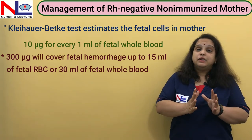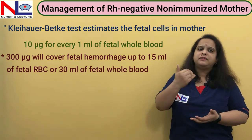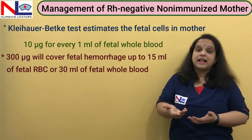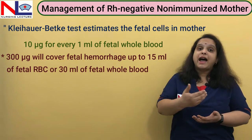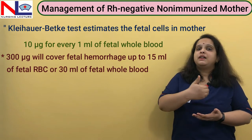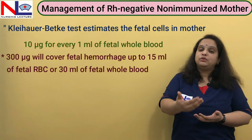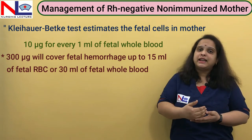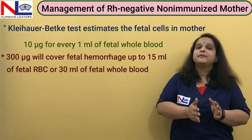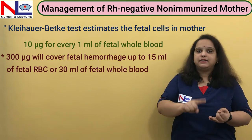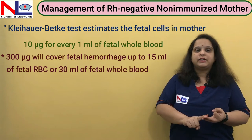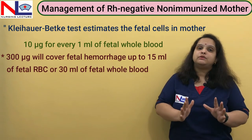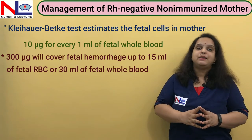This is how we manage the non-sensitized primigravida woman. Similarly, if the woman is multigravida and has not been sensitized by previous pregnancies and has received anti-D injections, we manage her the same way: perform ICT, if it remains negative continue monitoring, give antenatal anti-D prophylaxis at 28 weeks, and give the full postnatal dose at delivery. All non-sensitized women are managed by administering anti-D prophylaxis.